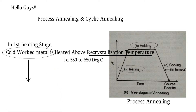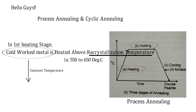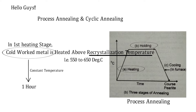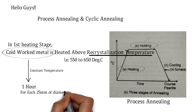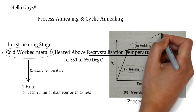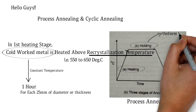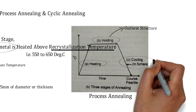The next stage is holding — holding the cold worked metal at constant temperature. The holding period is basically one hour for each 25 mm diameter or 25 mm thickness. In the holding process we get a uniform structure having equal grains.